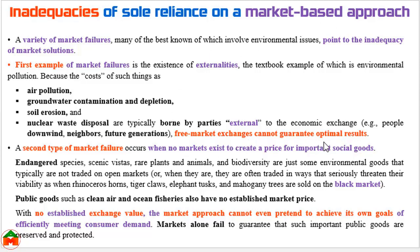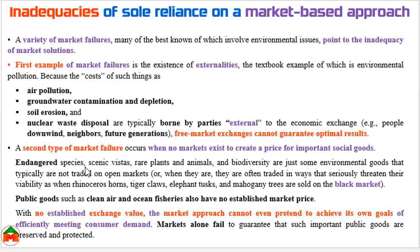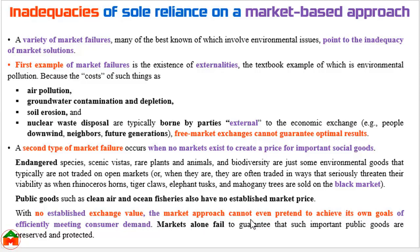The second type of market failure occurs when no markets exist to create a price for important social goods. We cannot guarantee a price for endangered species, scenic vistas, rare plants and animals, biodiversity, clean air, or ocean fisheries. Since there is no exchange value, the market approach cannot even pretend to achieve its own goal of efficiently meeting consumer demand. Markets alone fail to guarantee that such important public goods are preserved and protected.